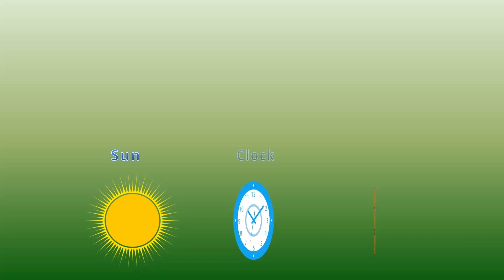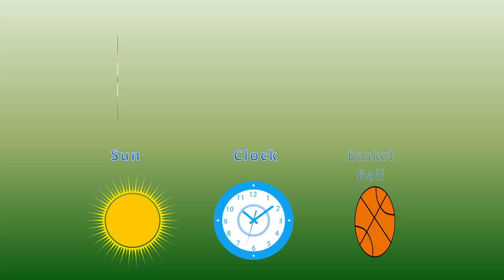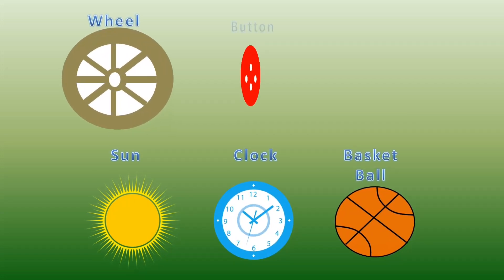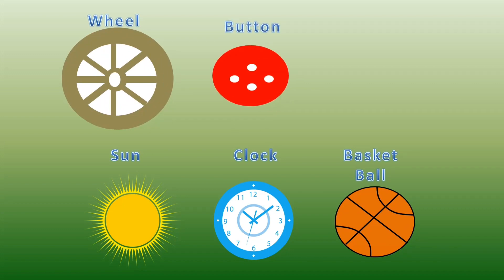Would you find the objects which are circle in shape? Guess one by one. Sun, clock, basketball, wheel, button, watermelon. Correct.